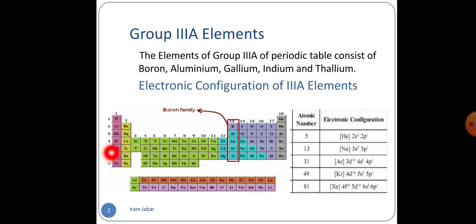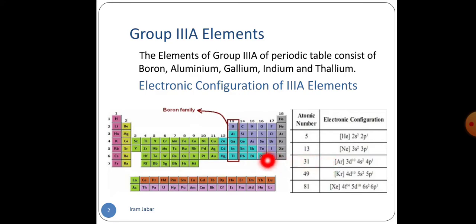Same is the case with gallium, indium and thallium. They belong to the 4th, 5th, and 6th periods, so they have 4, 5, and 6th valence shells, and again 3 valence electrons present in these subshells.